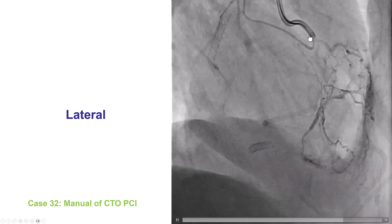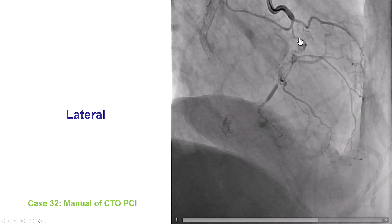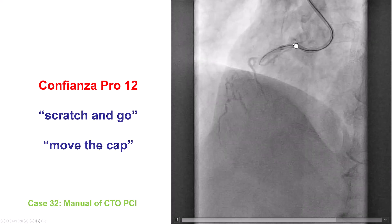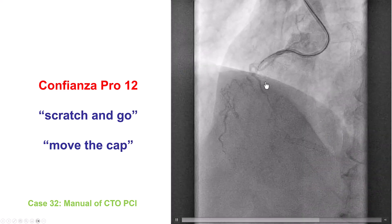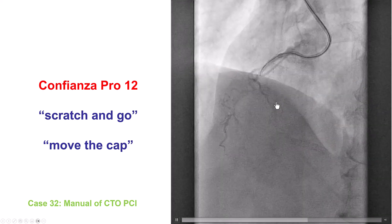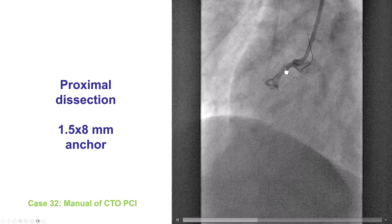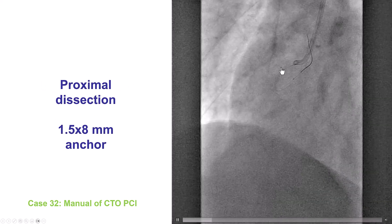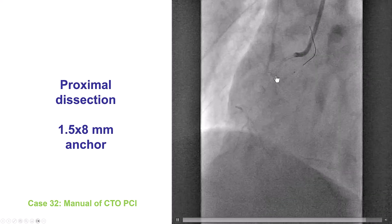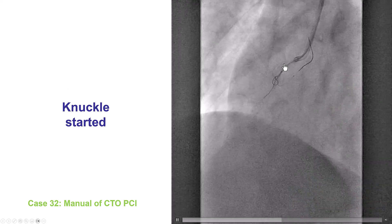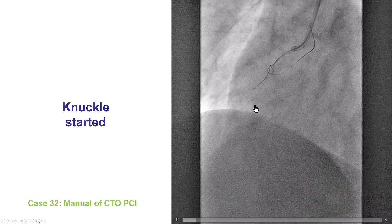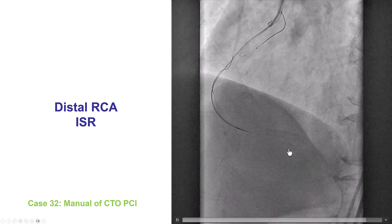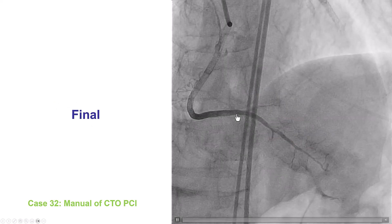It is unclear where the proximal cap is — this could be branches or a bridging collateral. A microcatheter and a Confianza Pro-12 guide wire were advanced and used to poke into the wall of the vessel proximal to where those branches were originating. A significant dissection was created, and then a microcatheter was used to advance a knuckled polymer-jacketed guide wire, which advanced along the course of the vessel, went all the way down, re-entry was achieved, and a nice final result was obtained.